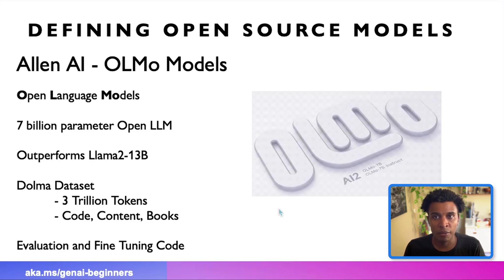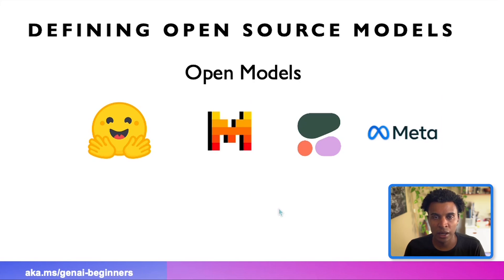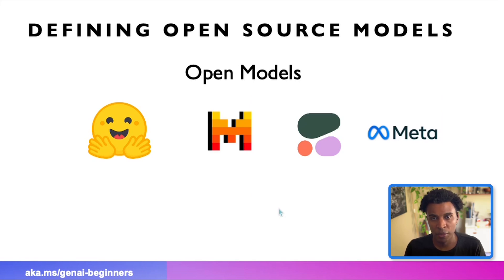OLMO is a prime example of a model that fits all the criteria for truly open source models. Where the community has focused lately is this world of open models, which may fit some but not all of the open source software criteria. This is where you'll primarily see model hosting providers such as Mistral, Cohere, Meta, or Hugging Face. Throughout the rest of this course, we'll call these open models, but the term is interchangeable with open source models.